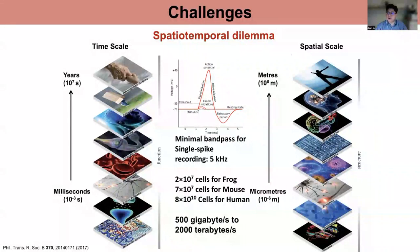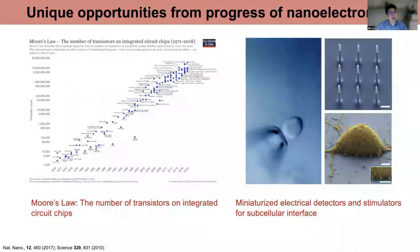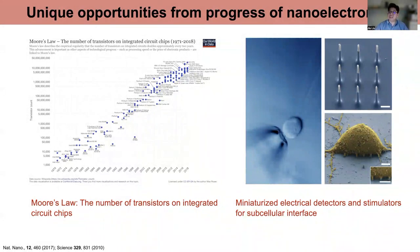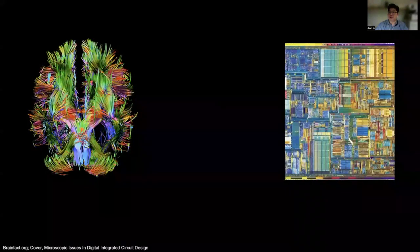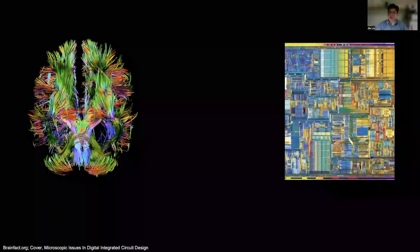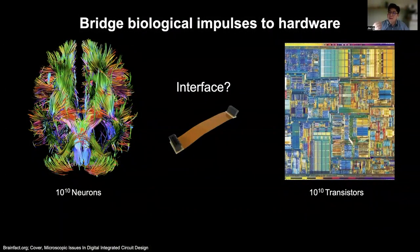Why do we think there's an opportunity now? On one hand, driven by Moore's Law, the number of transistors on one integrated circuit has already reached — or even surpassed — the number of neurons in a human brain. On the other hand, progress in nanotechnology allows us to miniaturize electrical detectors and stimulators down to sub-cellular size, stably interfacing with individual neurons in vitro. What we're missing is a scalable interfacing technology to bridge the electrochemical impulses in individual neurons to our powerful hardware to decode them.